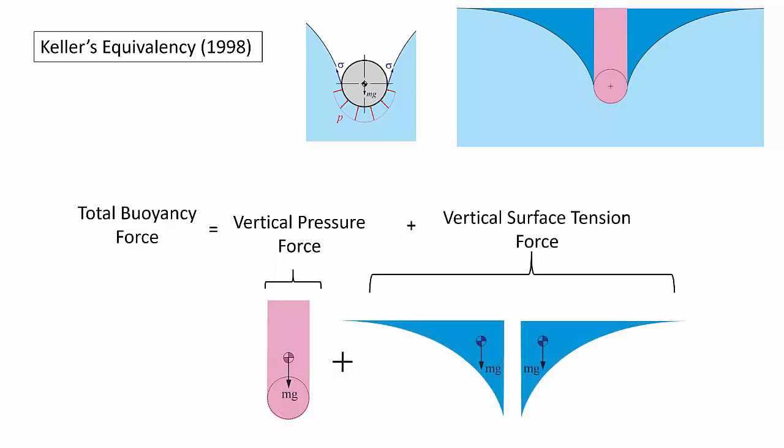The new result from Keller is that the vertical component of the surface tension force is exactly equal to the weight of the water displaced by the meniscus, the two dark blue regions. And this is what I'm calling Keller's equivalency.